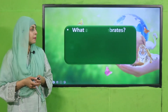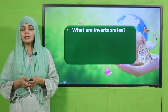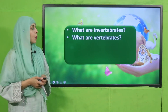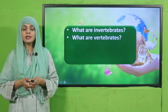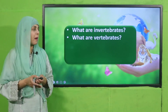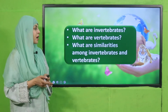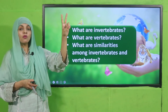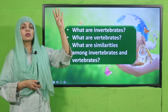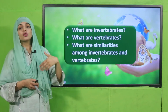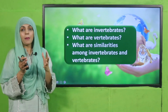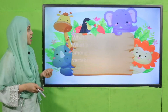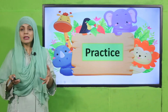Evaluation time. What are invertebrates? Animals without a backbone. What are vertebrates? Animals with a backbone. What are the similarities among invertebrates and vertebrates? Both need food, both can move, both can reproduce, both can respire and excrete. These are the similarities among vertebrates and invertebrates.